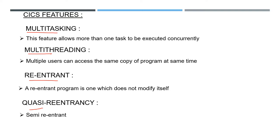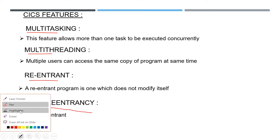It serves its purpose to every user the same way — nothing changes for any user; it serves each user individually. Re-entrant means it is not a self-modifying program — Amazon appears as Amazon only, even for one lakh users; it won't change into Facebook or WhatsApp. Quasi re-entrant means semi re-entrant — the home page and logout page appear the same, but modifications in between may be done.